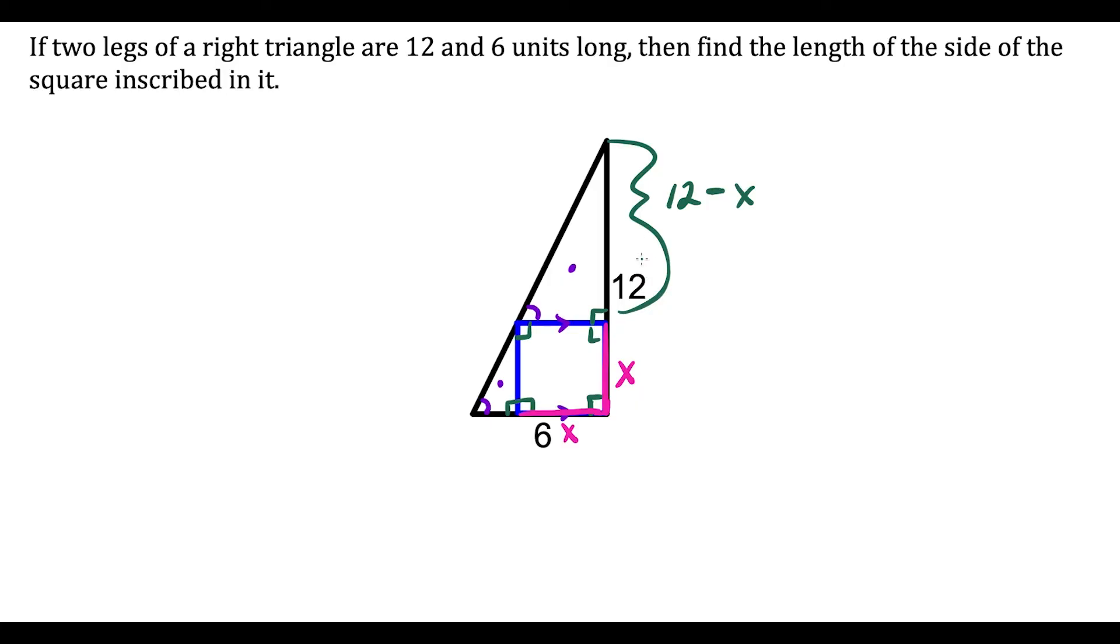From here, we could just draw these triangles separately. We have the big triangle like this—let's make sure that's a little neater. So we have this big right triangle here, and this is going to be 6 and 12.